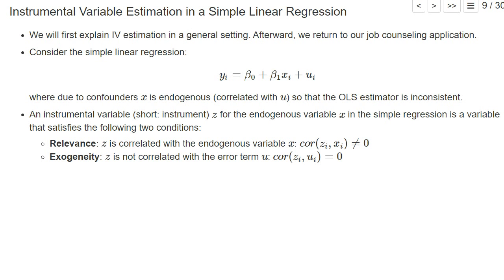Consider a simple linear regression with a single explanatory variable x, and due to confounders x is endogenous, so it's correlated with the error term u in our regression. This means our OLS estimator is biased and inconsistent.